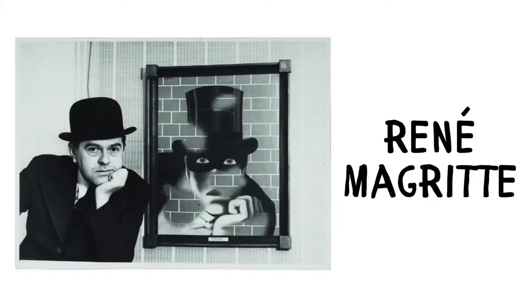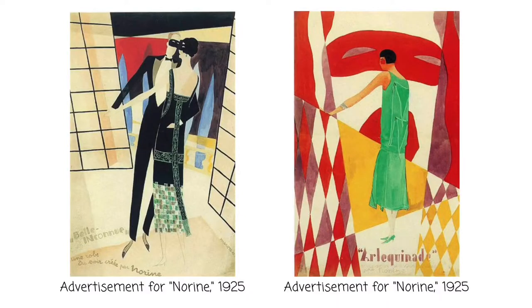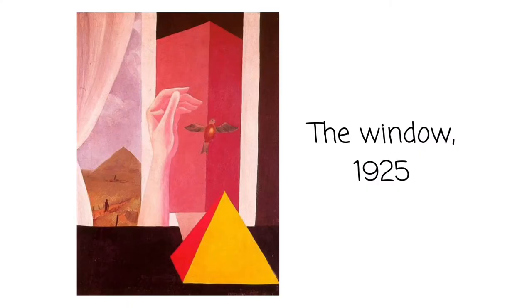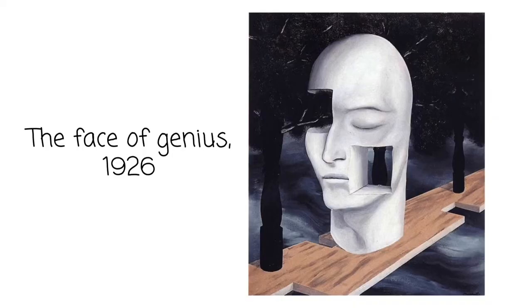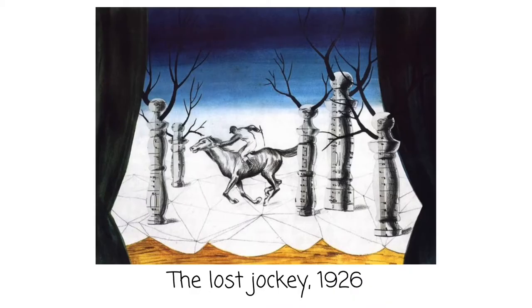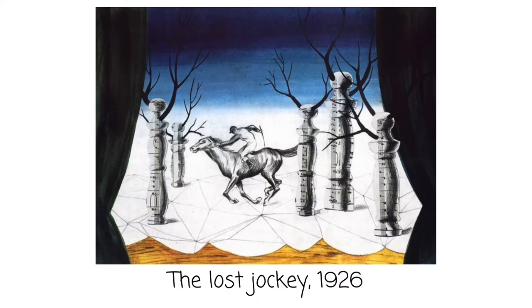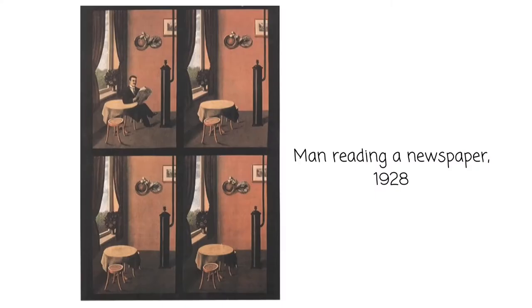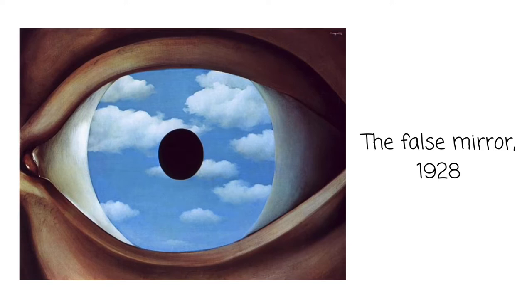Renee Magritte was born in 1898 in Belgium. He attended the Brussels Academy of Fine Arts as a young man, and then worked designing wallpaper and creating artwork for advertisements. His artwork was initially inspired by other artists' depictions of familiar objects in unusual or dreamlike arrangements.